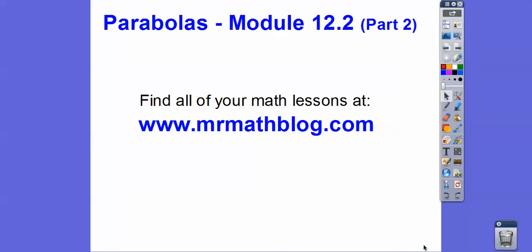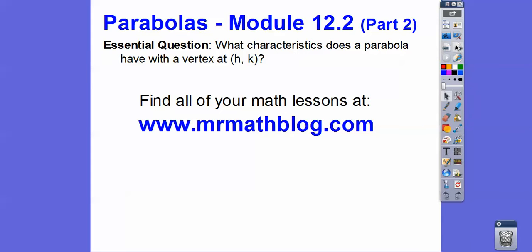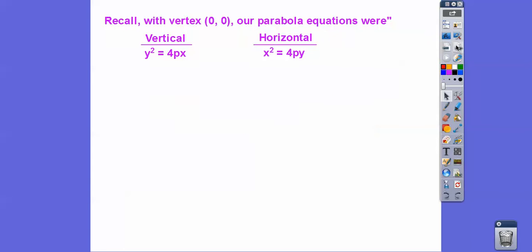Hey everybody, this lesson is on parabolas again, module 12.2. So we're going to move the parabolas away from the center (0, 0). So here's our question: what characteristics does a parabola have with the vertex at (h, k) instead of (0, 0)?